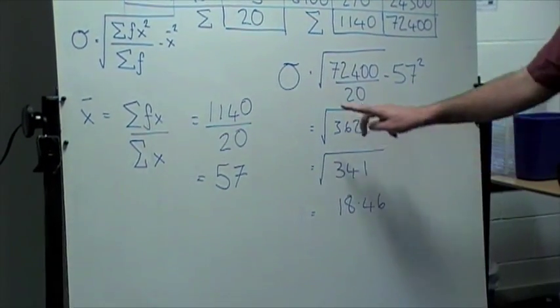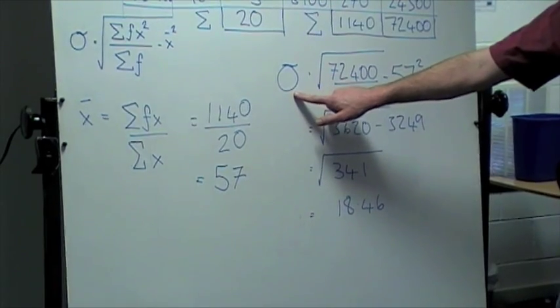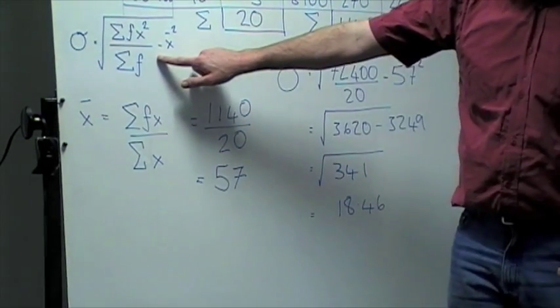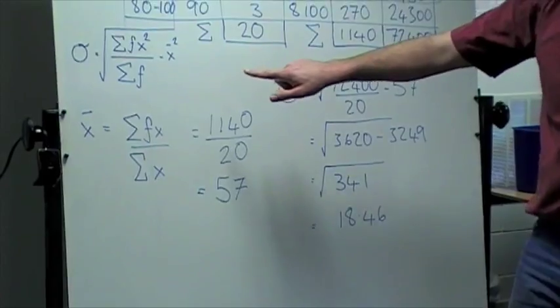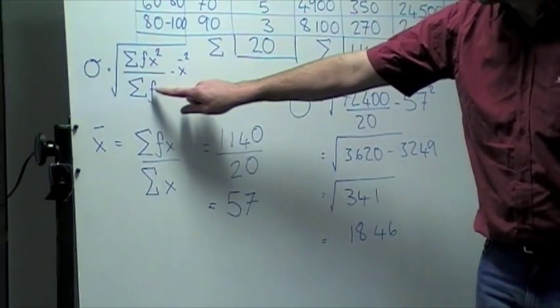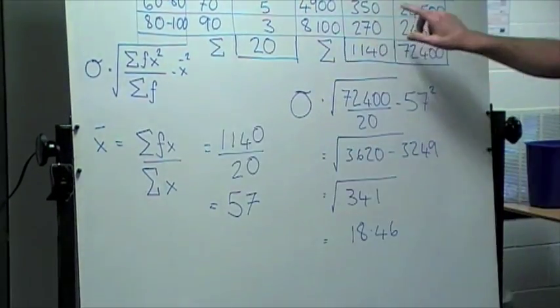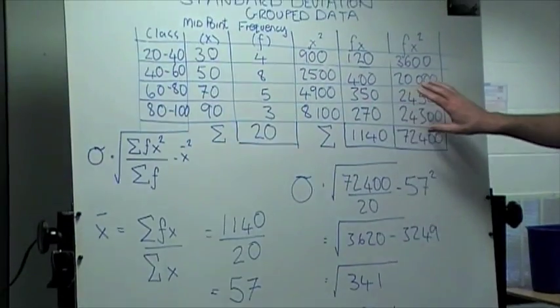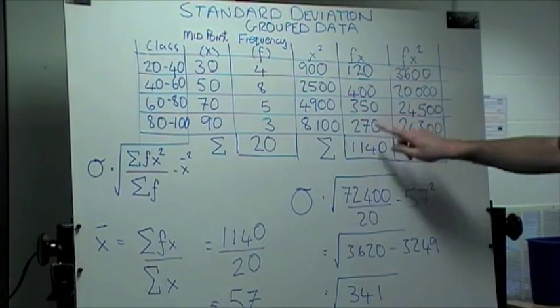Now what we've got to do is calculate the standard deviation using this formula here. Now, we've calculated all these figures from our table here. So let's substitute them in.